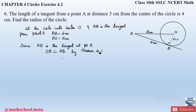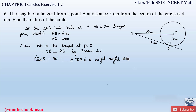Since OB is perpendicular to AB, angle OBA = 90°. Therefore triangle AOB is a right-angled triangle. By the Pythagoras theorem: hypotenuse² = perpendicular² + base². Since the right angle is at B, the hypotenuse is AO, the base is AB, and OB is the perpendicular. So: AO² = OB² + AB².